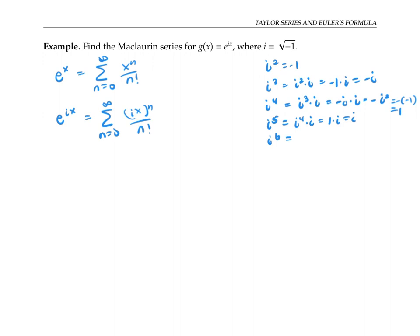i to the sixth is negative 1 again. i to the seventh is negative i. And i to the eighth is 1, using similar computations. And the pattern repeats with this length fourth cycle, going from i to negative 1, to negative i, to 1, and back to i again.